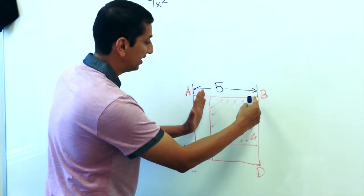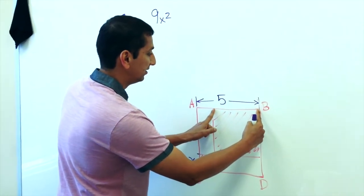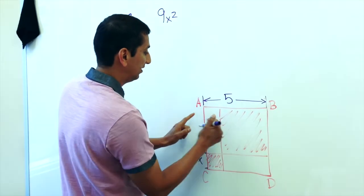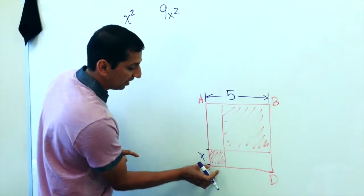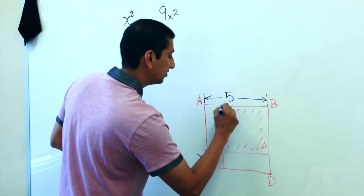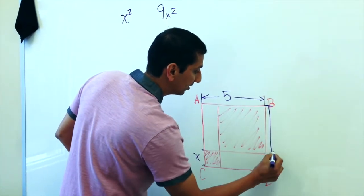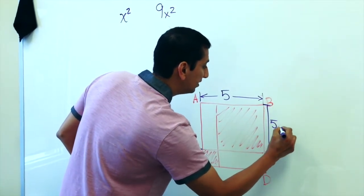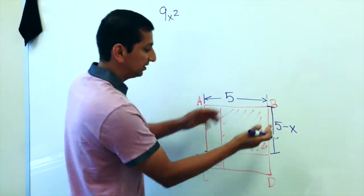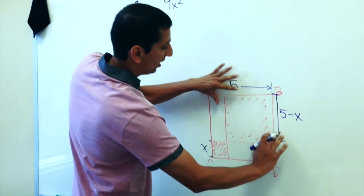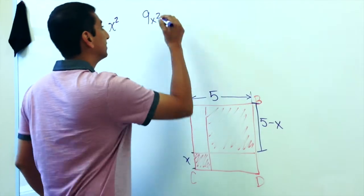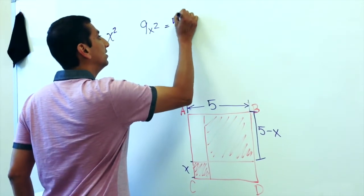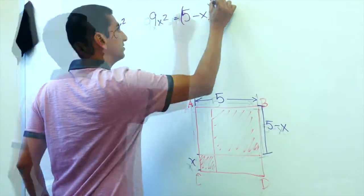Okay, the other thing I know is that this length is five minus this little piece, and that little piece is X. So we can label this length here to be five minus X. And since this is a square, I can write that five minus X squared like this.